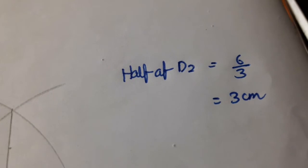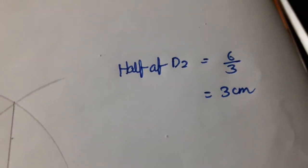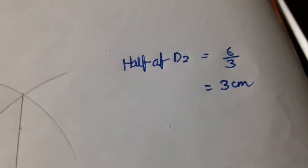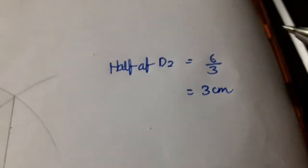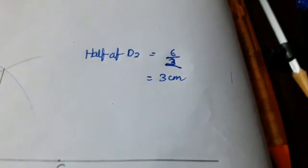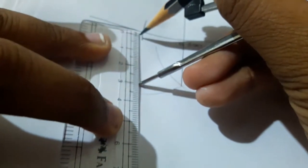So guys, now you have to take half of D2. That's 6 cm divided by 2—oh I made a mistake—that's divided by 2, that equals to 3 on your scale using your compass.